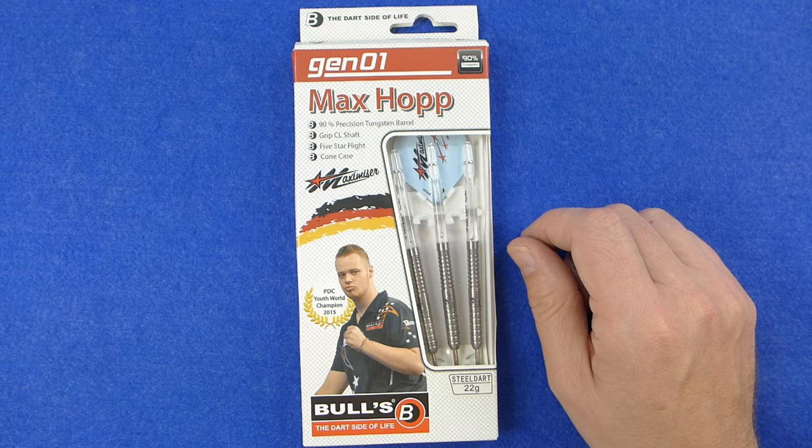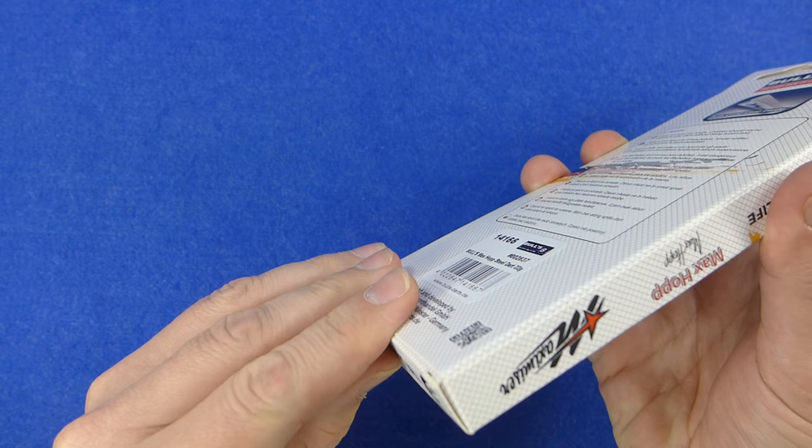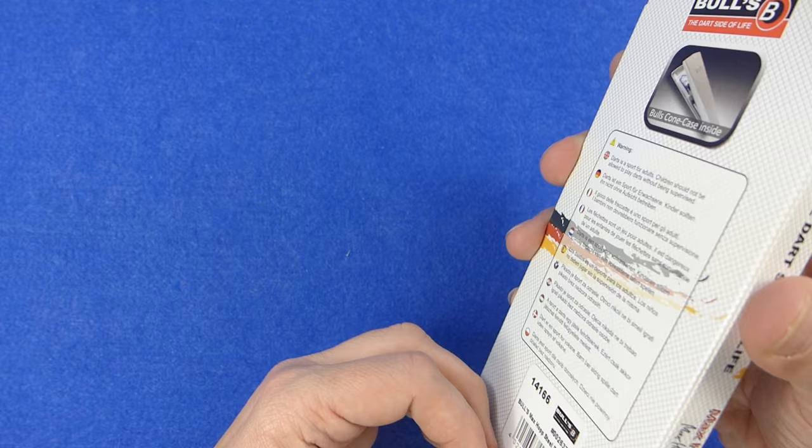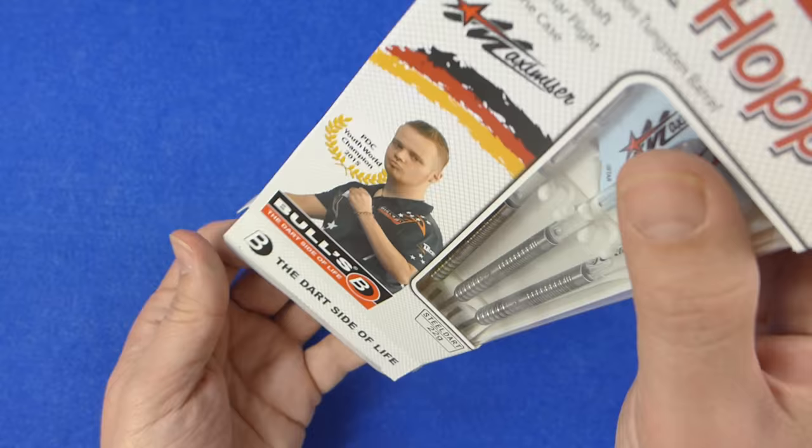All right, let's have a look at the darts. As you can see they come in a fairly slimline box with the picture of Max Hopp on the front. Oh wait a minute, there's a plastic tab sticking down there. I could barely see that, that's how bad my eyes are getting. So sharpen that, pull the darts out.